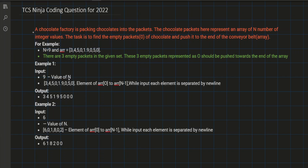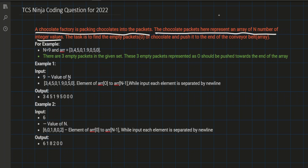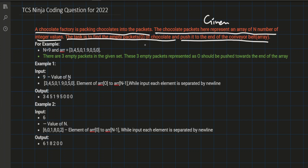Now in the first half we need to understand the language of the question. The question says a chocolate factory is packing chocolates into packets. The chocolate packets represent an array of n number of integer values. The task is to find the empty packets of chocolate and push them to the end of the conveyor belt. The zero values represent the empty packets.